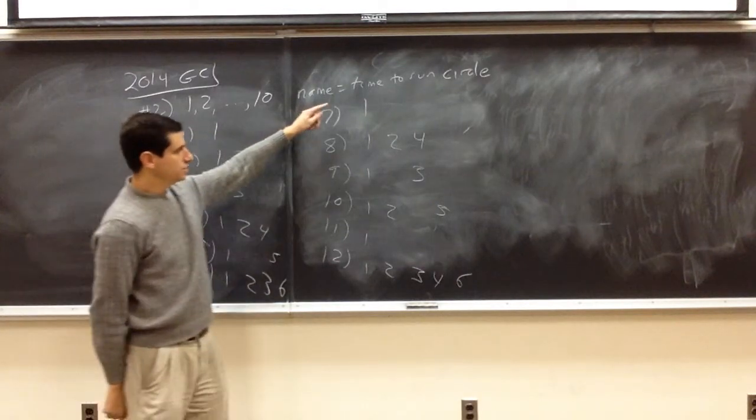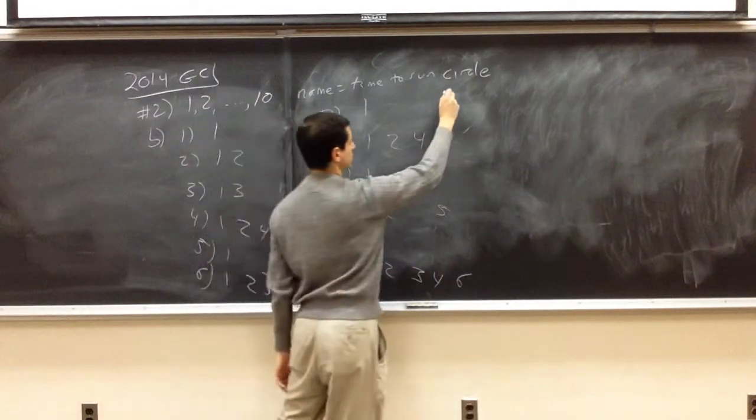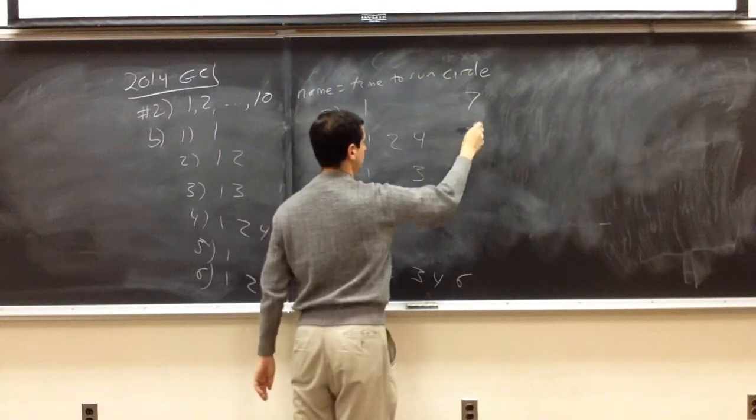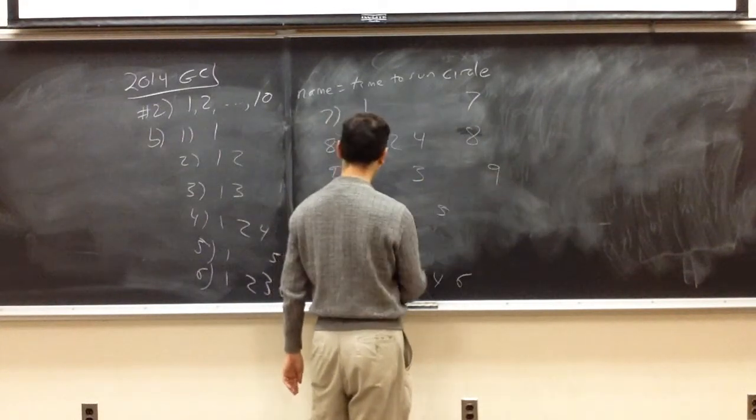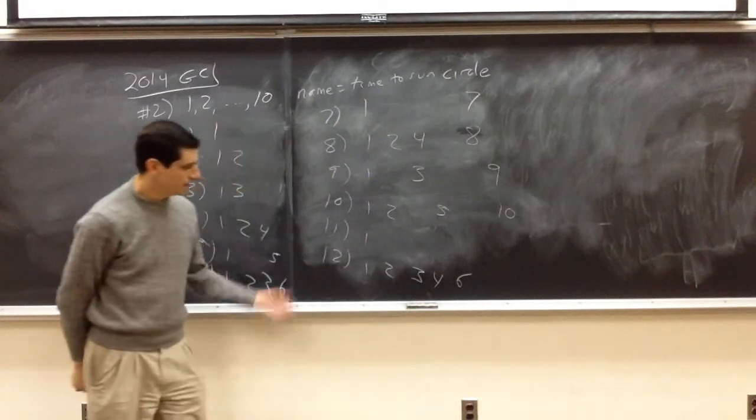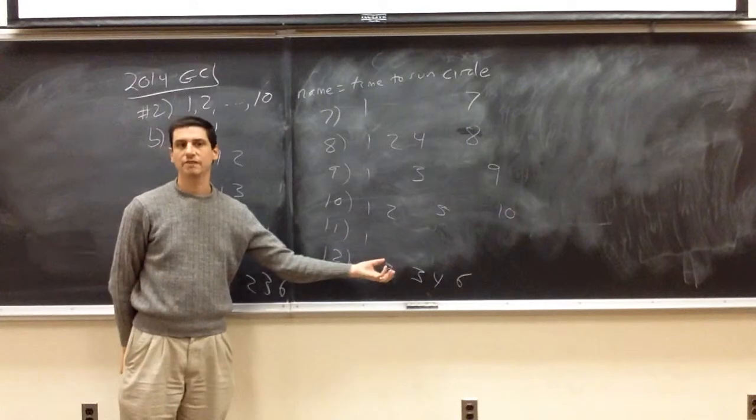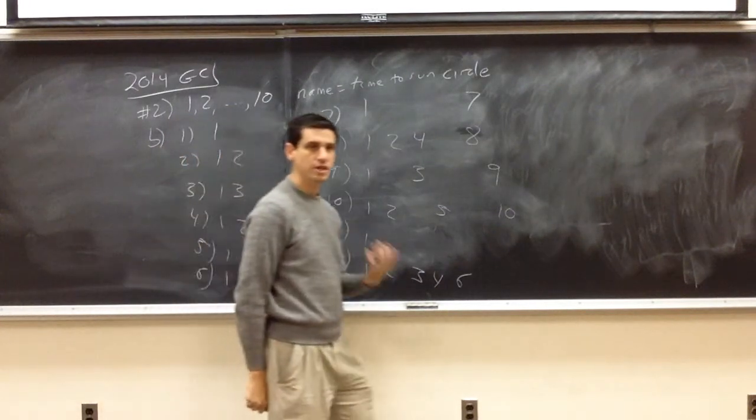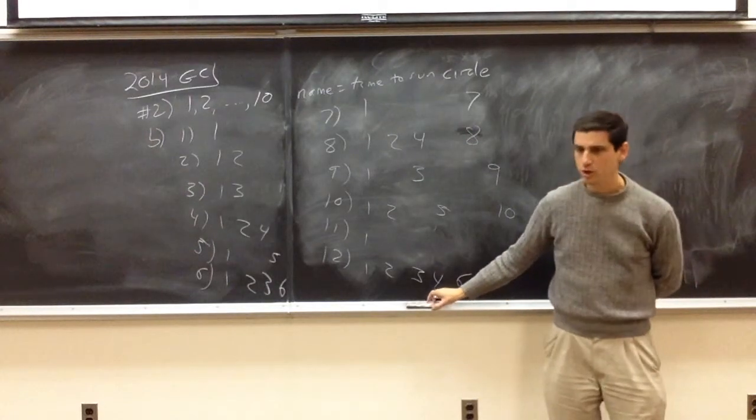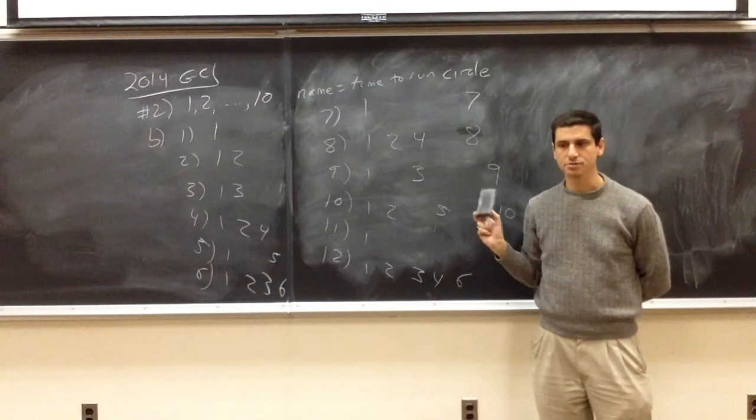And we see that the first time in which we get at least half of the horses is twelve. And so the brute force here isn't too bad for two. Any other questions or ways of looking at this problem?